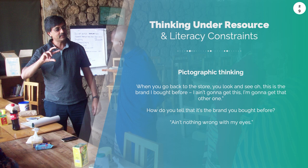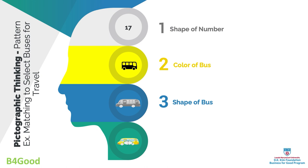Some people cannot read numerals — that suggests a very low level of literacy — so they will pattern-match bus numbers. A bus numbered 17 comes along, then 17A which looks like 17, and they'll get on the wrong bus. People who get a prescription from the doctor will buy medicine, pattern-match the first letters, think they've got the right medicine, and take it.